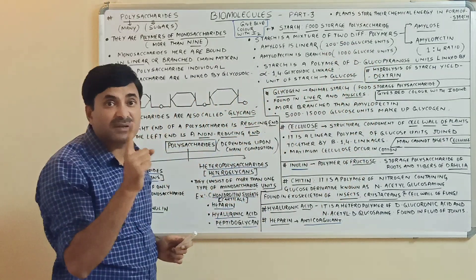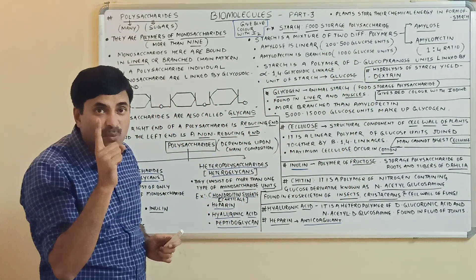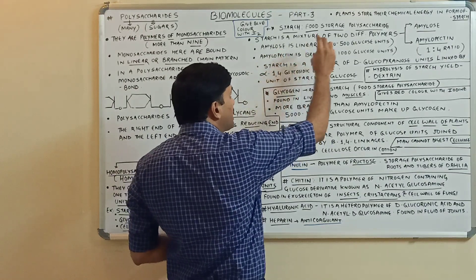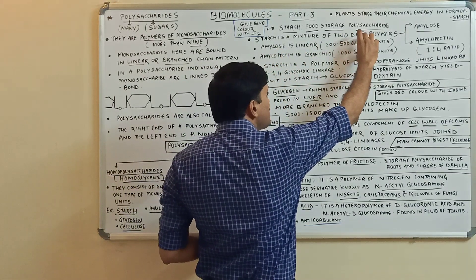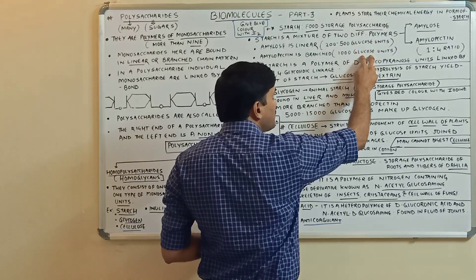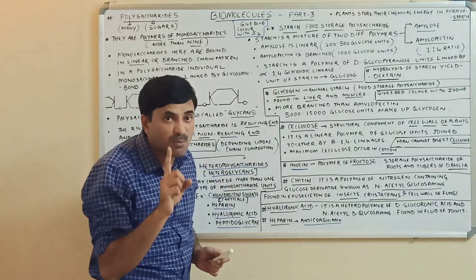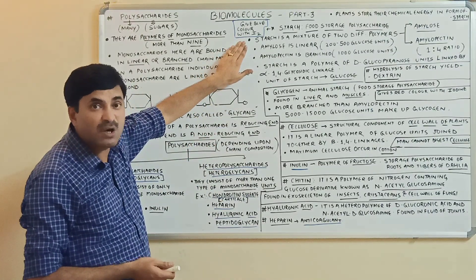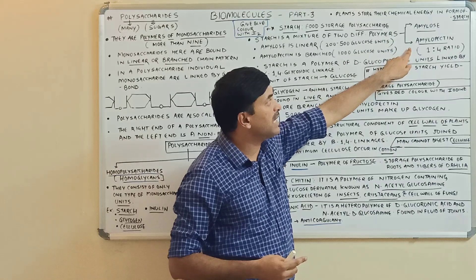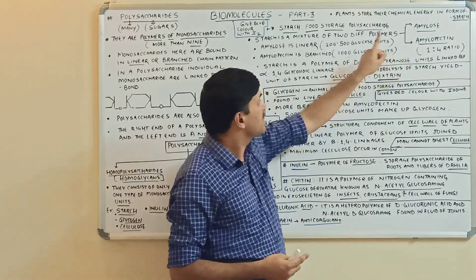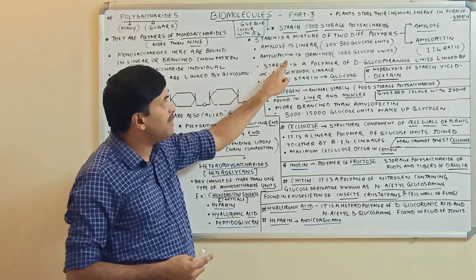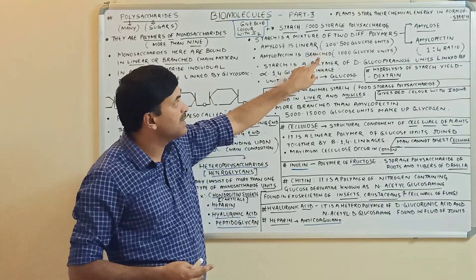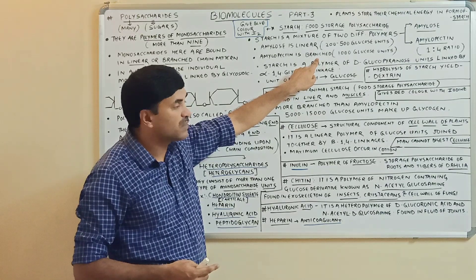Starch is a homopolysaccharide because both amylose and amylopectin are made up of a single monosaccharide unit — glucose. Starch is a polymer of D-glucopyranose units linked by alpha-1,4 glycosidic linkage. So the unit of starch is glucose. Amylose is linear with 200 to 500 glucose units; amylopectin is branched with about 1000 glucose units.